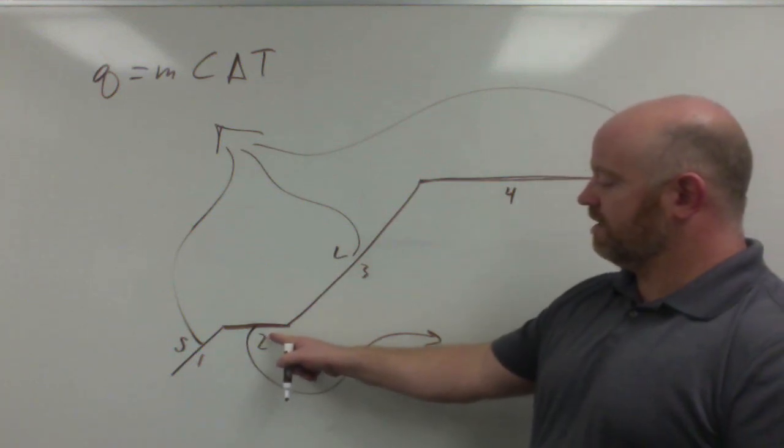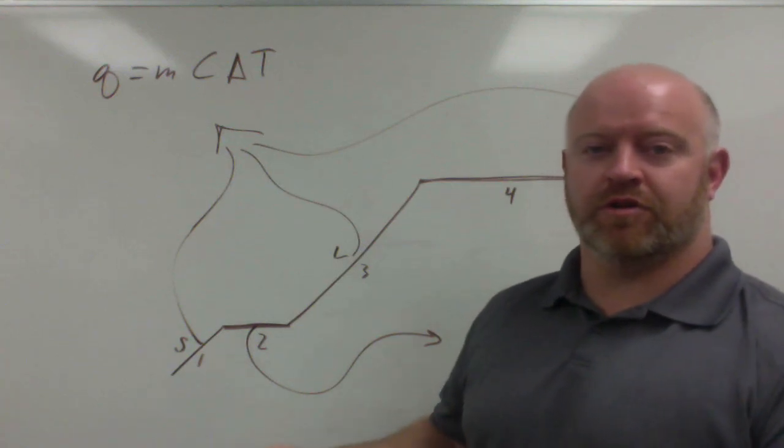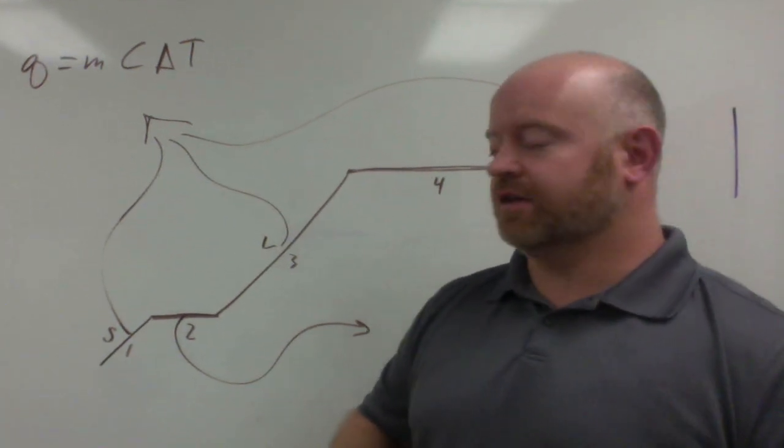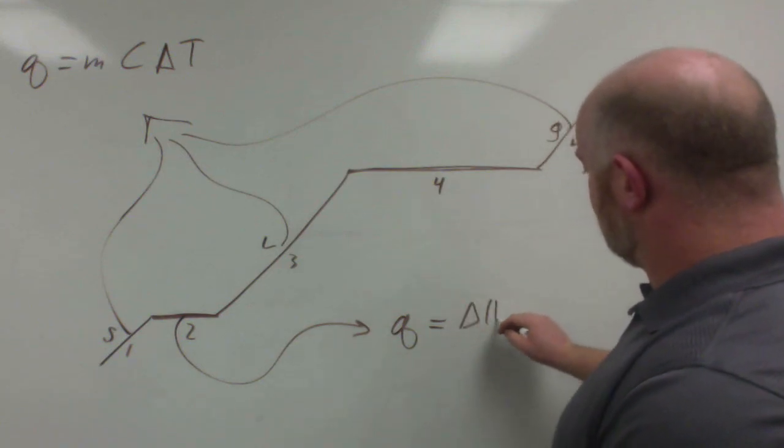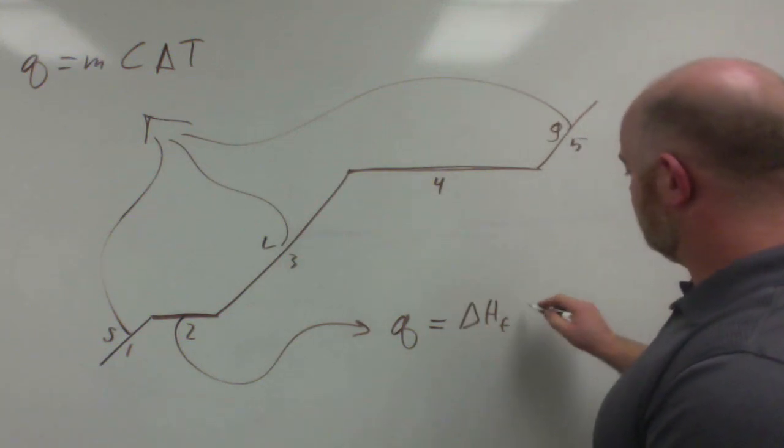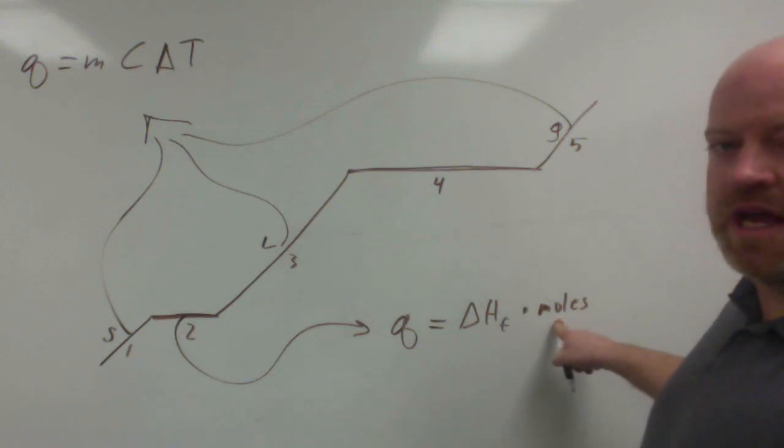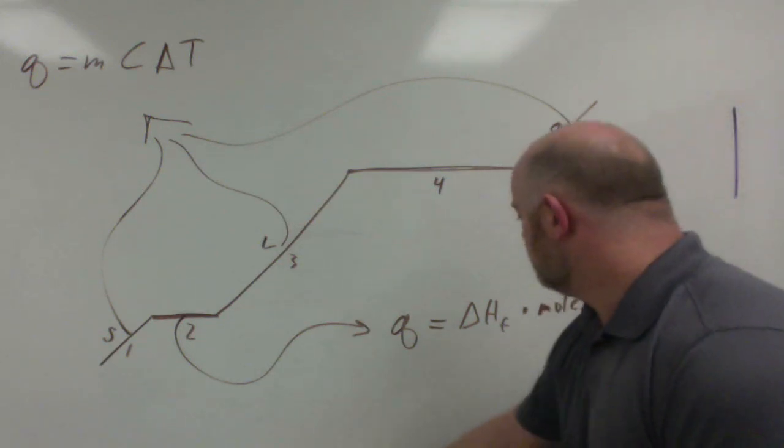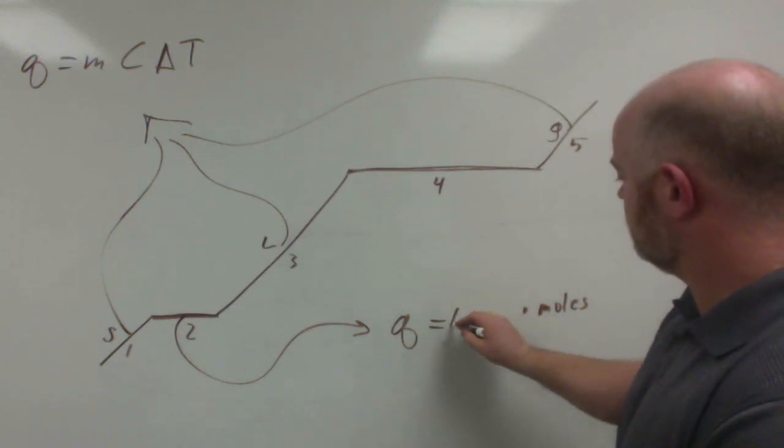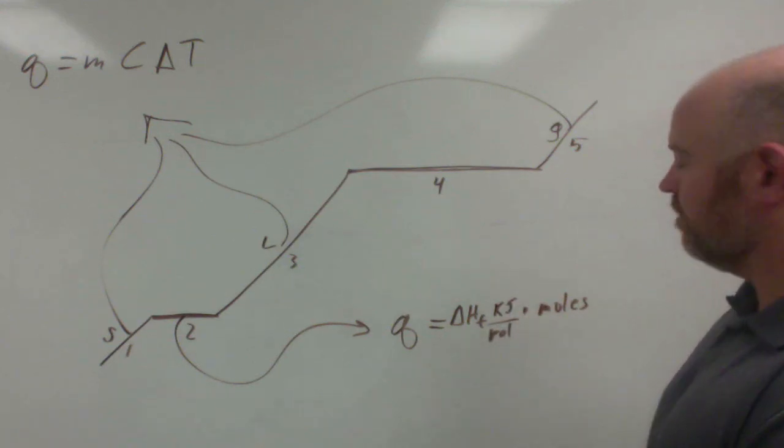So at line two, when we're converting from a solid to a liquid or a liquid to a solid, either melting or freezing, we say that the energy change is equal to the change in enthalpy of fusion times the number of moles we have. Now, we need to multiply it by our number of moles because this value in here is actually labeled kilojoules per mole.